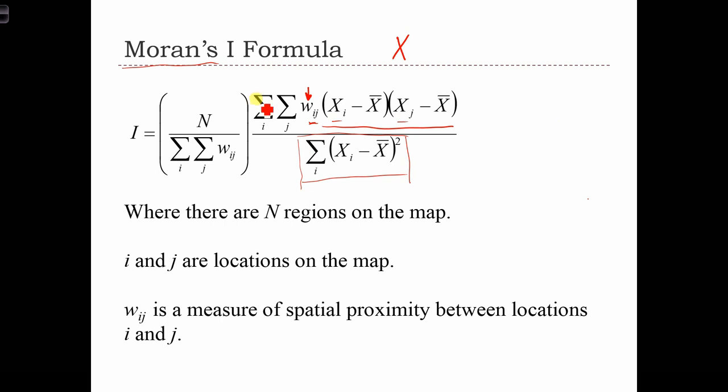And over here to the left, this first part of the fraction is just n, the sample size, divided by the sum of all the weights. So we're going to sum up over the entire weight matrix. And we're just going to use this to standardize the statistic into a range between minus 1 and plus 1.